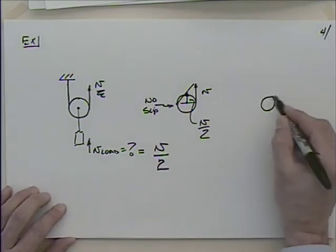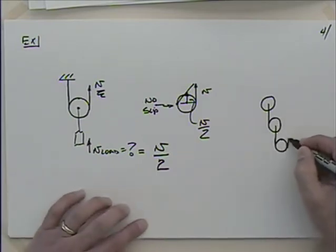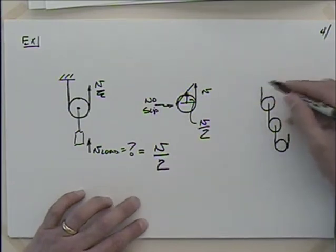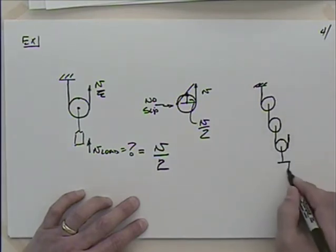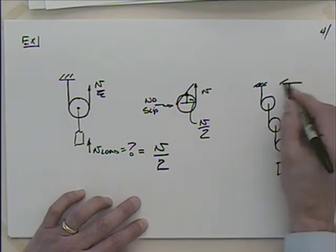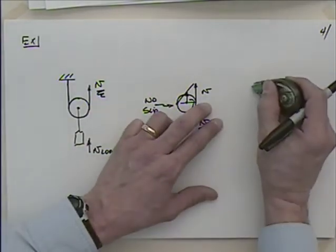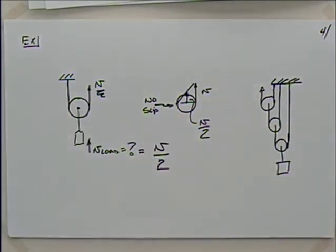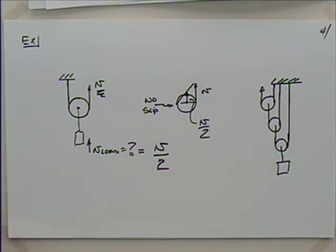You can apply this no-slip analysis as many times as you want for more complicated problems - just do it three times over for a triple-pulley arrangement. That's a slightly different way of looking at it compared to tracking rope lengths. Now let's try a much more difficult and practical problem - a car problem.